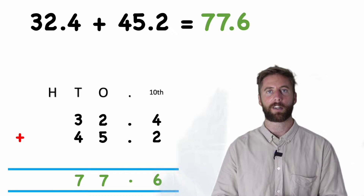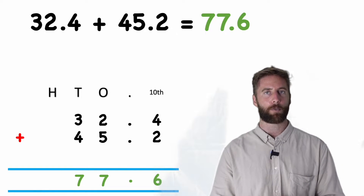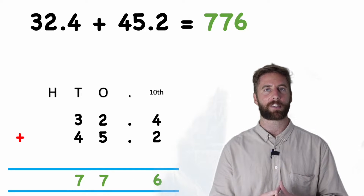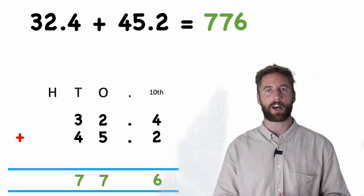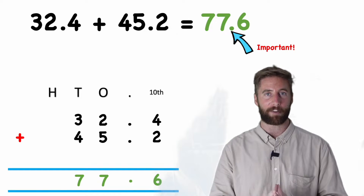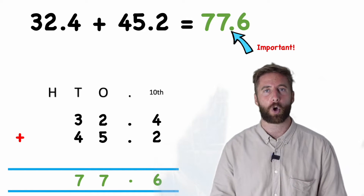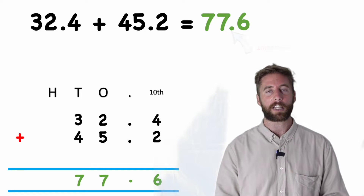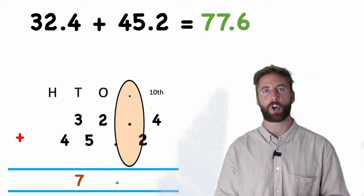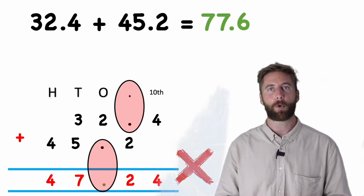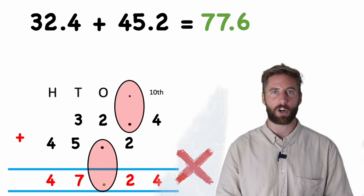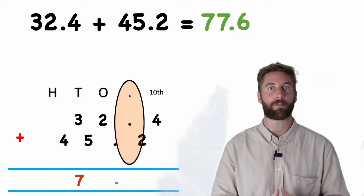That decimal point is really important. Let's imagine we forgot to put it in. What's my answer now? Well, it looks a lot like seven hundred and seventy-six, which is way bigger than the correct answer of seventy-seven point six. So that decimal is really, really important and something we must never forget. Also notice that all of our decimal points are in one perfect line — that's a clear indicator that the question is set up correctly. If your decimal points are in different places, you've probably made a mistake. So really make sure your decimal points are in the right place before you start.